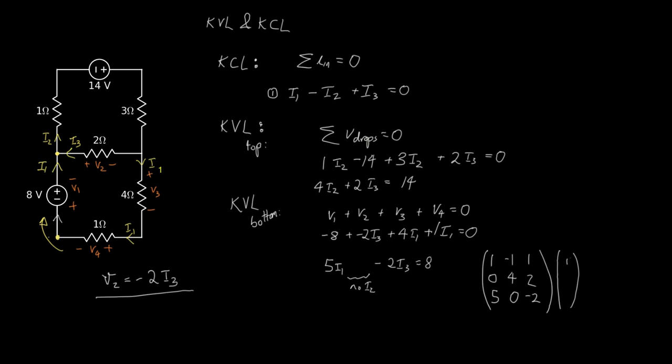Multiply that by our I vector. That results in the column vector 0, 14, and 8.